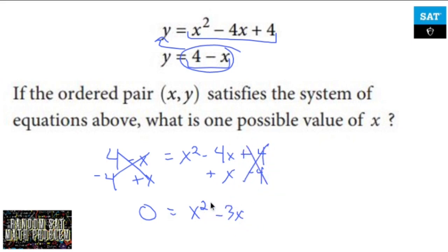The zero product property says, why don't I factor this out? I can factor out an x value. So this becomes zero equals factor out an x. Once I do that, I'm left with x minus 3.